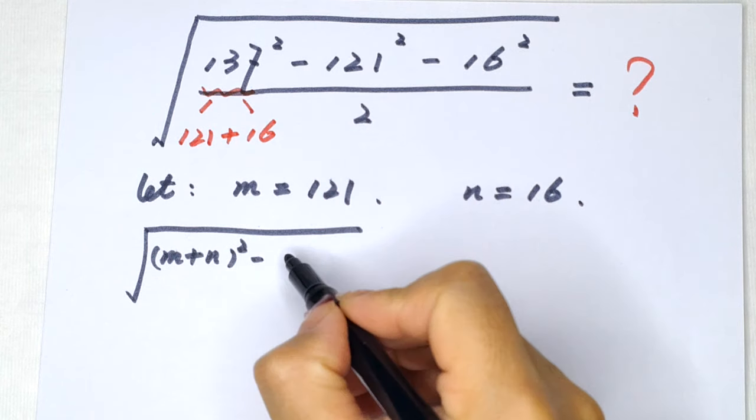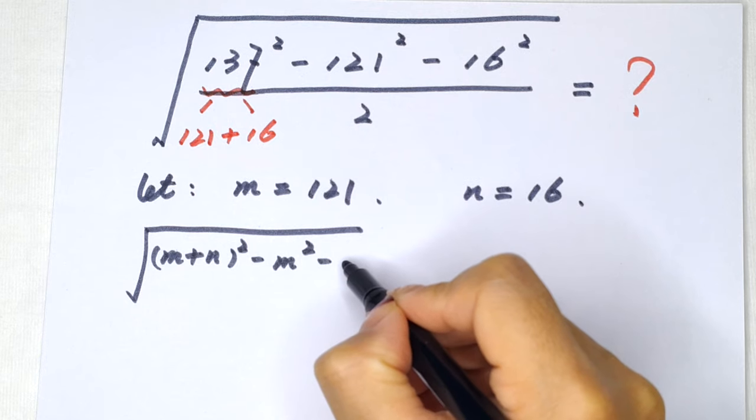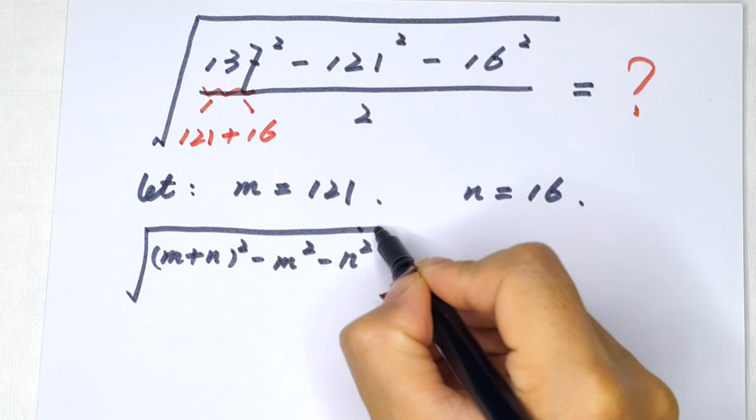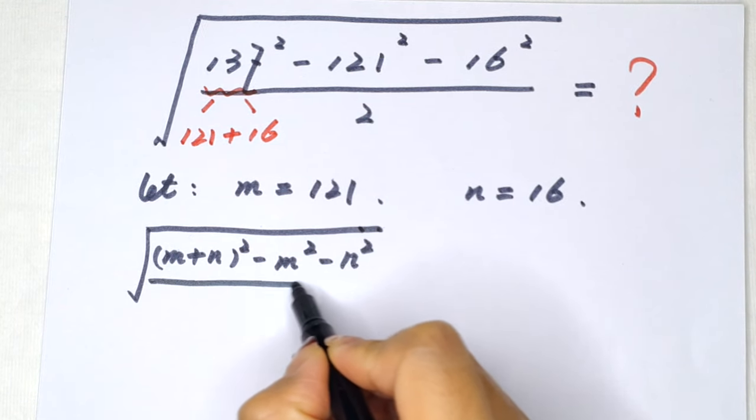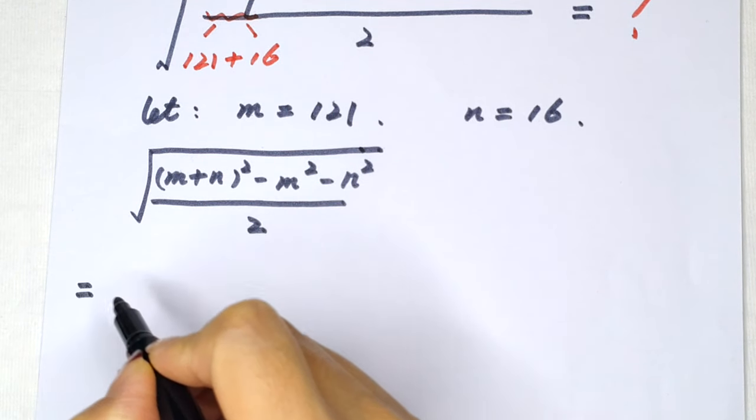this is m, so m squared minus n squared, then divided by 2. It will be equal to,